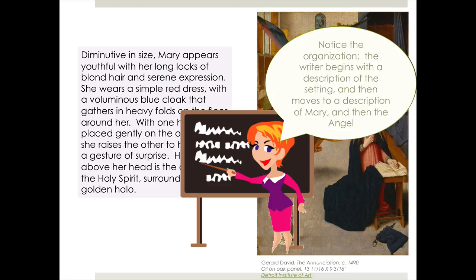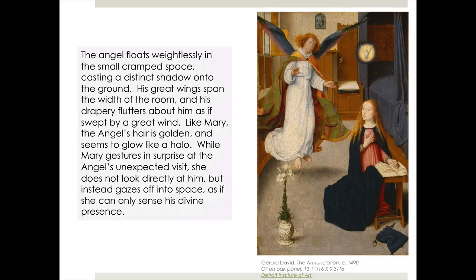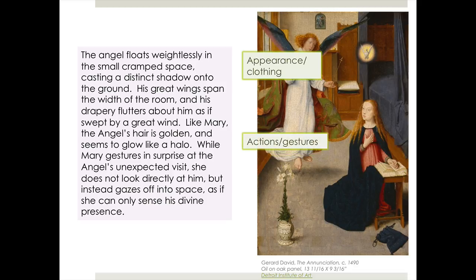Now I want you to notice the organization of this description. The writer begins with a description of the setting — that's really almost a full paragraph — and then moves to a paragraph where the focus is on the description of Mary, and then in the next paragraph, a description of the angel. You're going to want to think about organizing your description as well. The angel floats weightlessly in the small cramped space, casting a distinct shadow onto the ground. His great wings span the width of the room, and his drapery flutters about him as if swept by a great wind. Like Mary, the angel's hair is golden and seems to glow like a halo. While Mary gestures in surprise at the angel's unexpected visit, she does not look directly at him, but instead gazes off into space as if she can only sense his divine presence.